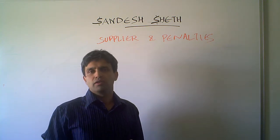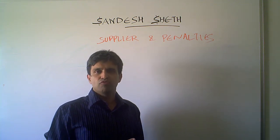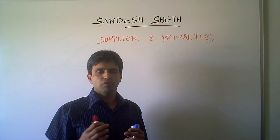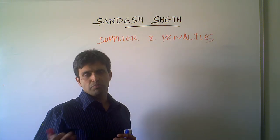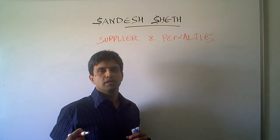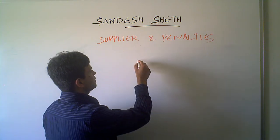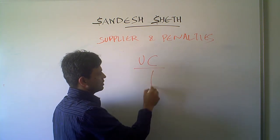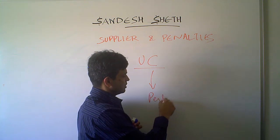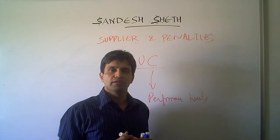Typically when we enter a contract with a supplier, we specify the performance levels which the supplier should provide to us. As you all know in IT service management, it is called the underpinning contract, which has got the performance levels defined in it.